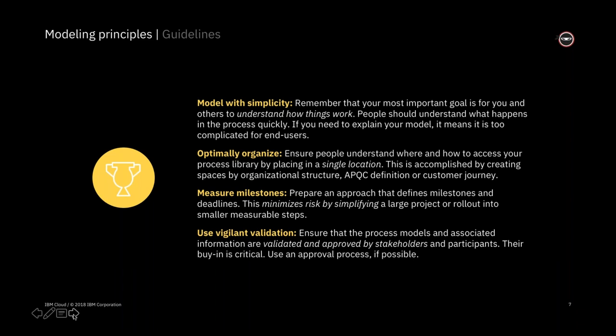Ensuring that people understand where and how to access the library you've created is really critical — it needs to be in a single location where they can find the processes they need. This can be accomplished by creating spaces or folders organized by organizational structure (human resources, sales, marketing), using the APQC definition at APQC.org, or by a customer journey map. Once you create the processes, you want people to access them, use them, and reuse them.